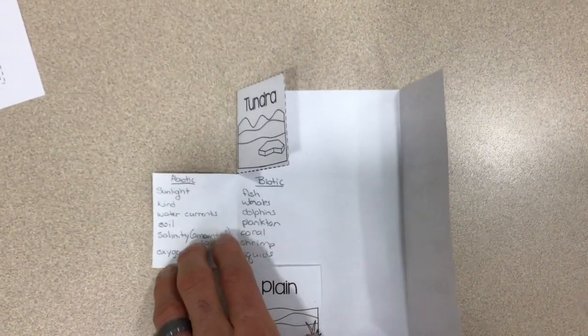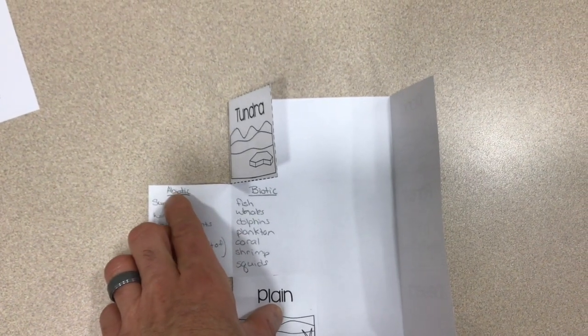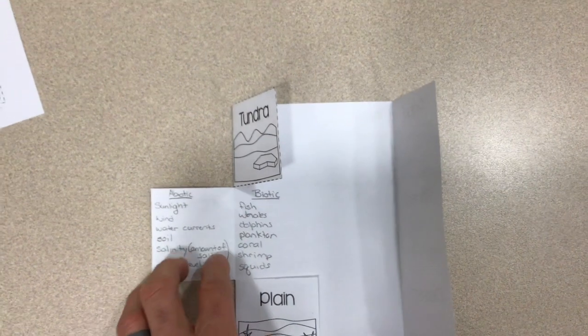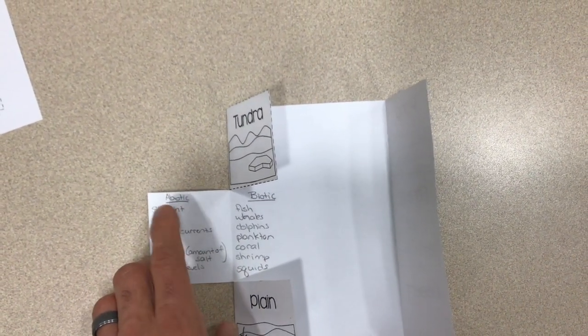And then on the inside of the panel you're going to write 'abiotic' at the top, A-B-I-O-T-I-C, and I'll have that on the board. And then you're going to write down specific things that are abiotic about the ocean.